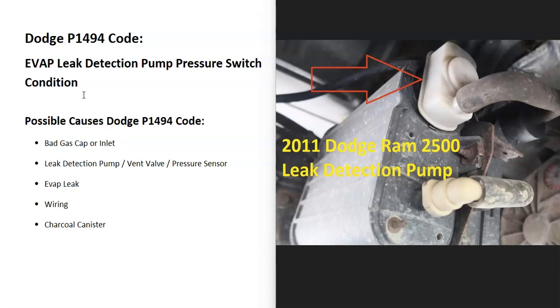And so what are some possible causes? Well, it could be a bad gas cap or inlet. It could be a bad leak detection pump, which also usually contains the vent valve and pressure sensor. There could be a leak in the system somewhere. It might be in the wiring and possibly the charcoal canister.